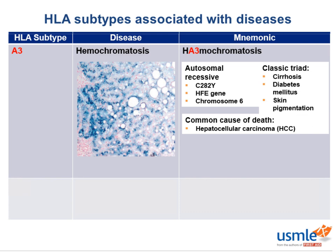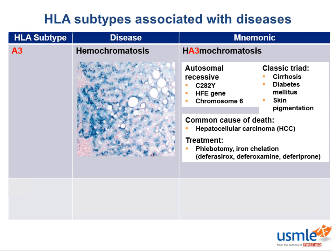Treatment involves getting rid of that iron. We can do repeated phlebotomies or chelate the iron with deferasirox, deferoxamine, or deferiprone. Fe stands for iron, so it's like we're trying to DELETE that iron.